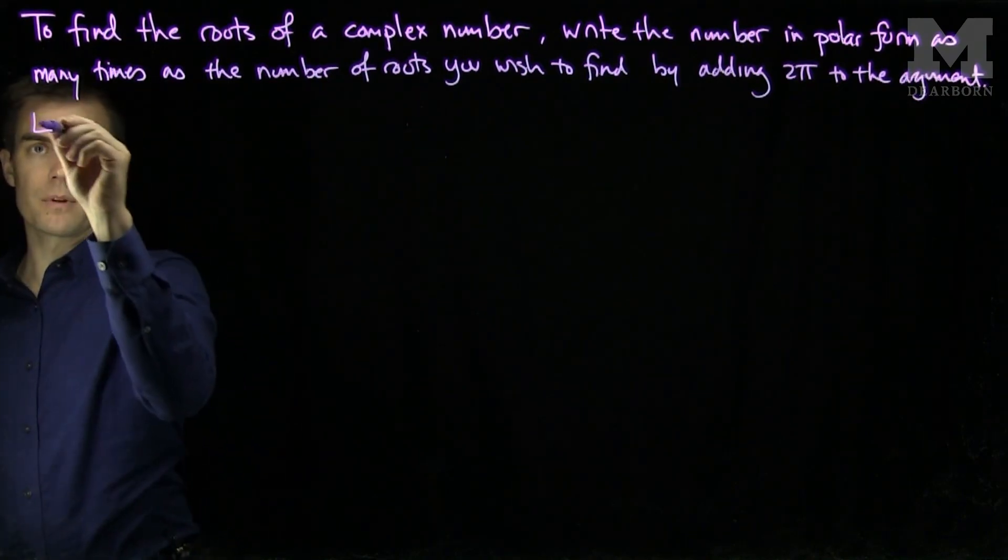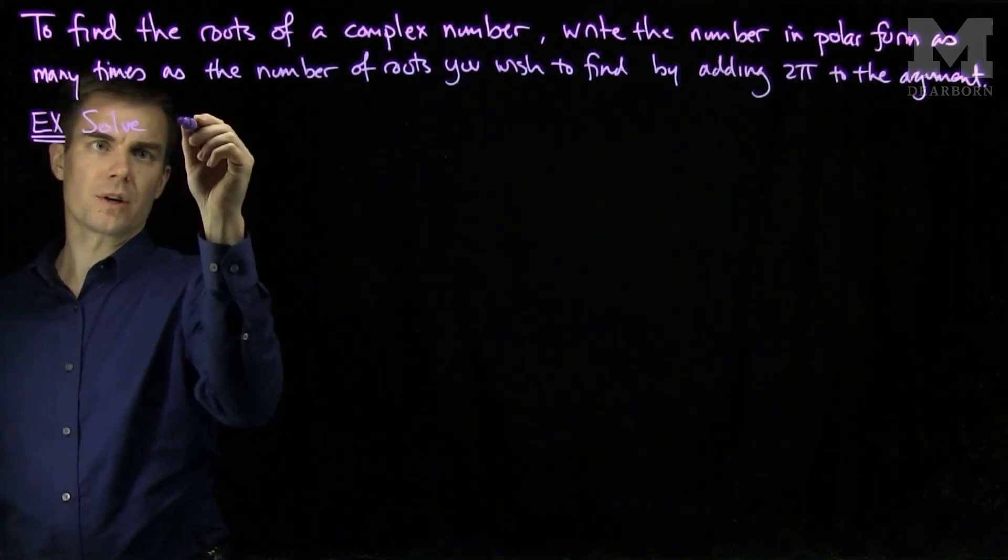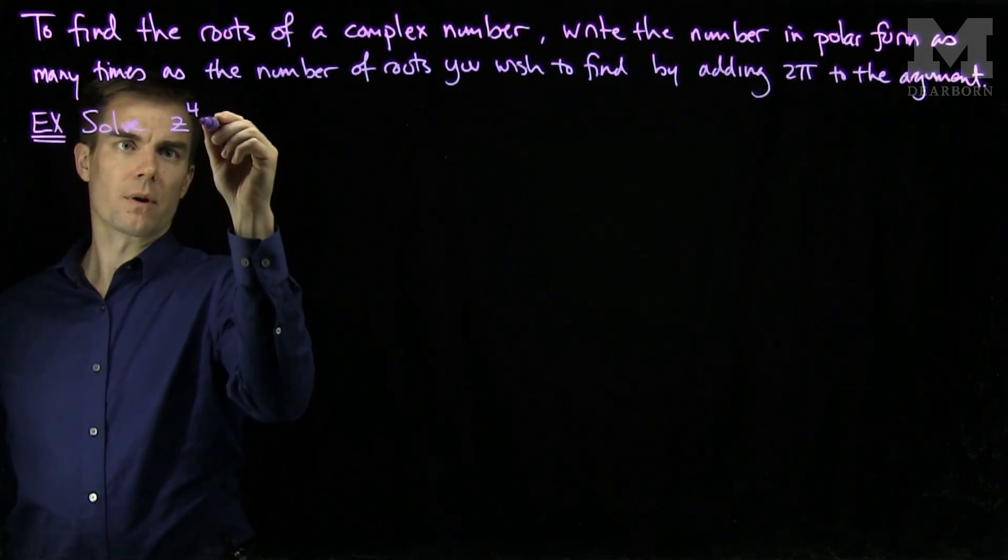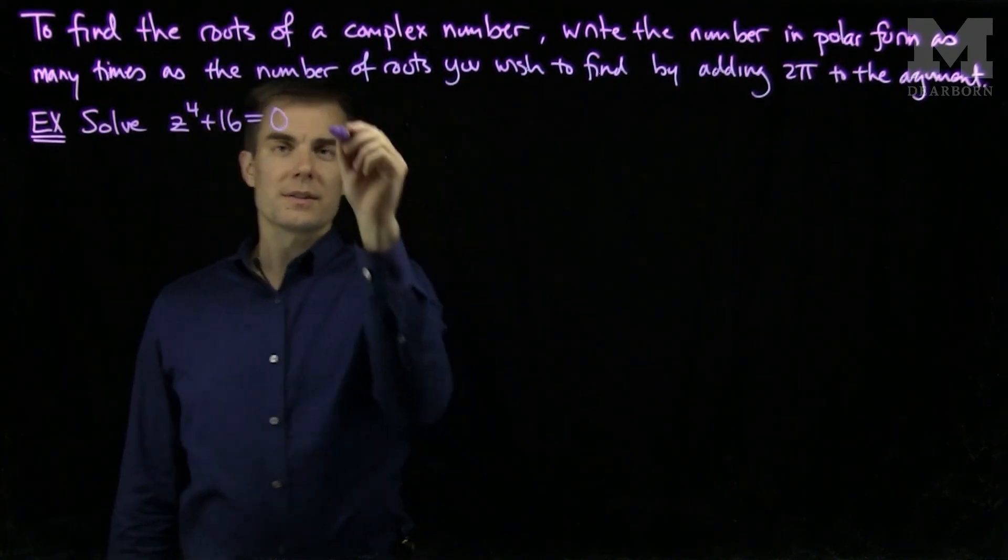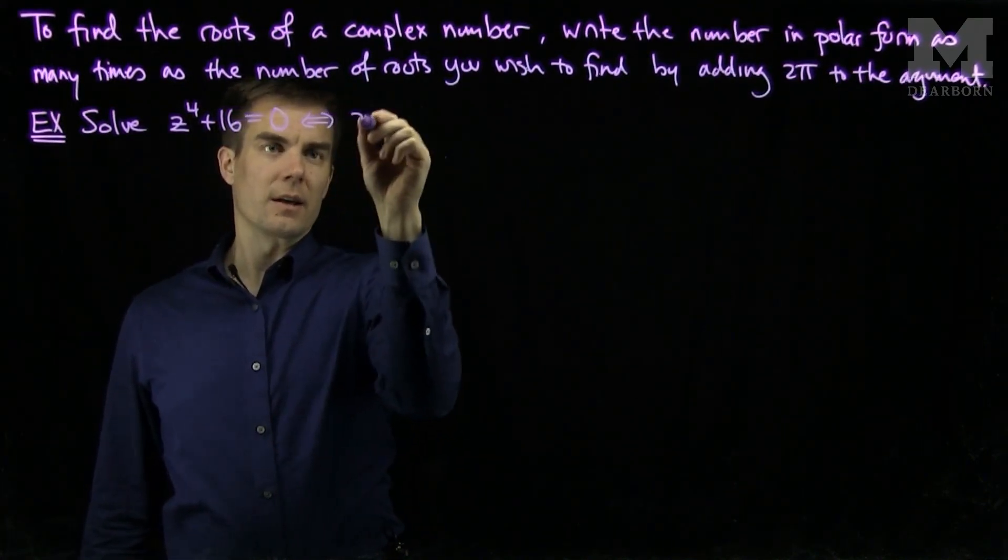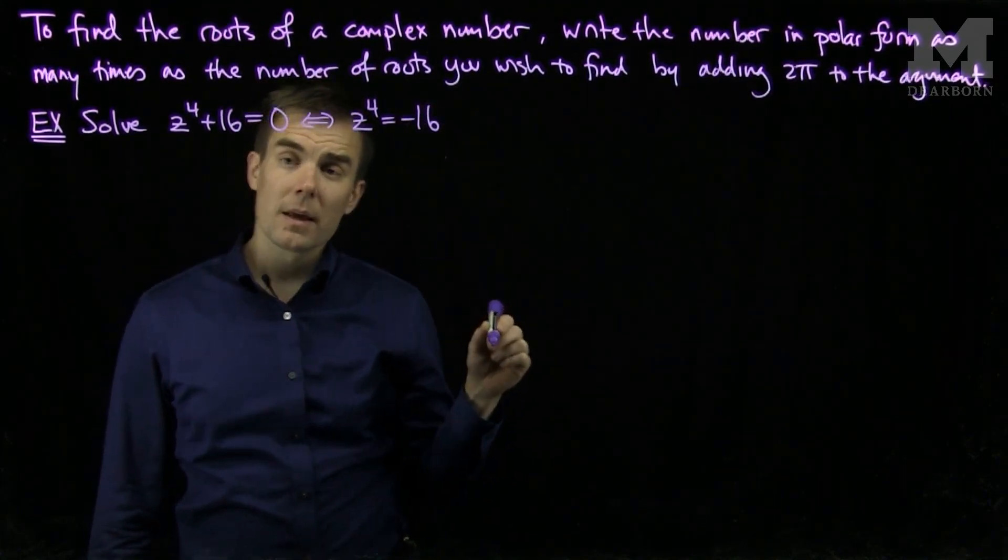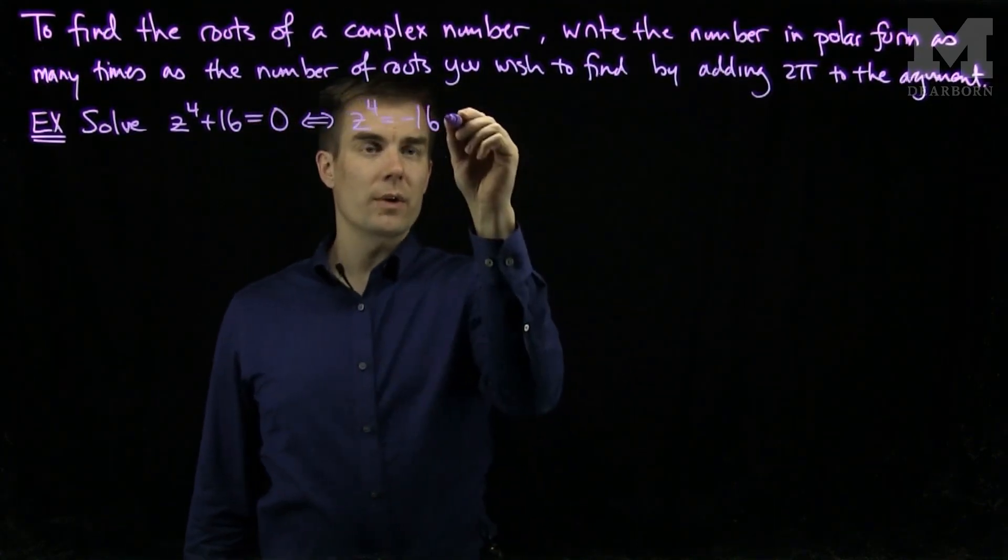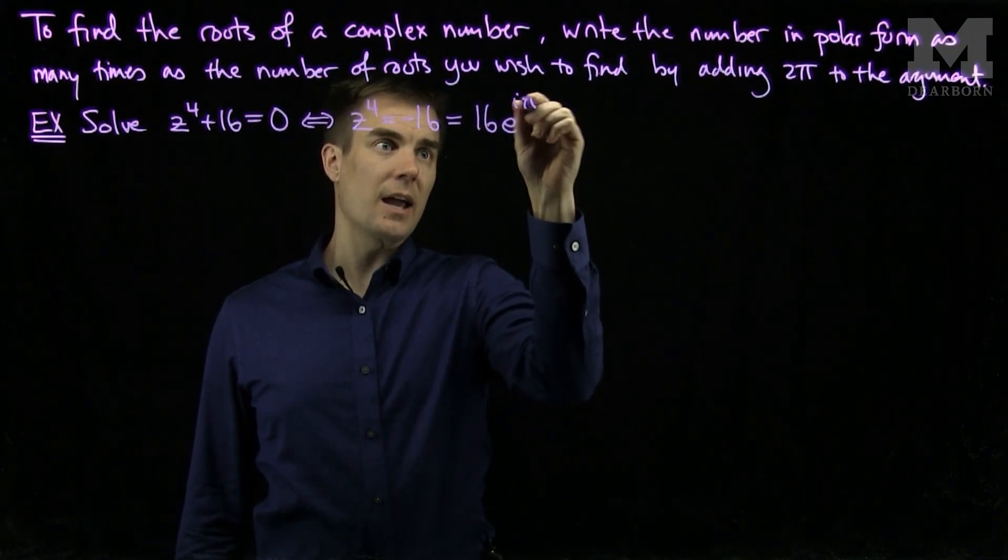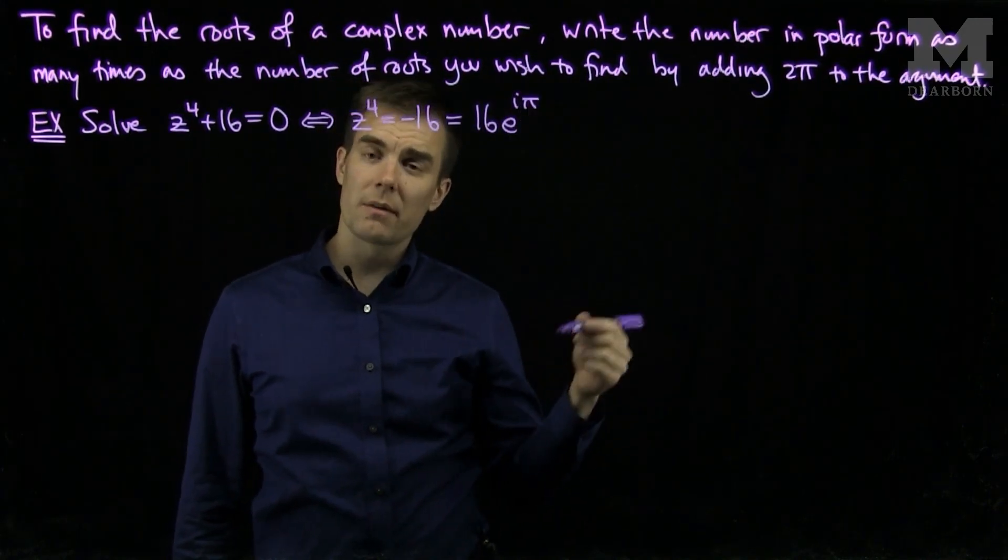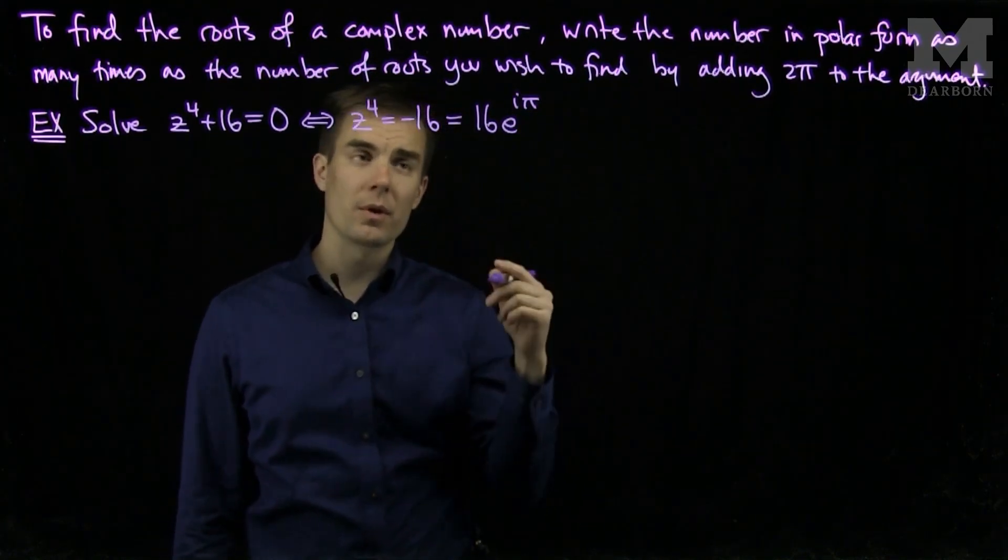Let's look at an example of this. Let's solve the equation z to the 4th plus 16 equals 0. This is equivalent to saying that z to the 4th is negative 16. And by Euler's formula, we can write negative 16 as 16e to the iπ. Since the argument of negative 16 is π, it's 180 degrees away from the real axis.